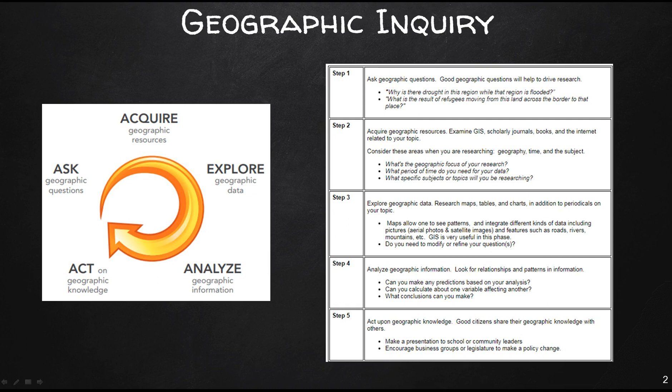For instance, urban planners, traffic engineers, and demographers may be interested in understanding the commuting patterns between cities and suburbs. This would be a geographic interaction. Biologists and botanists may be curious about why one animal or plant species flourishes in one place and not another. Geographic location distribution questions.